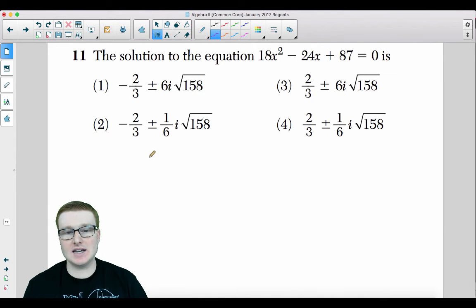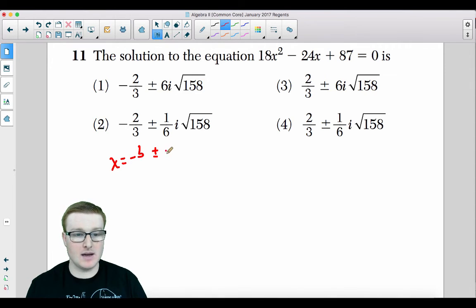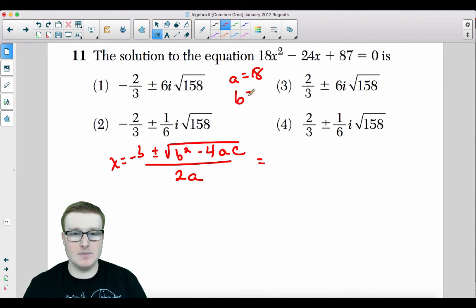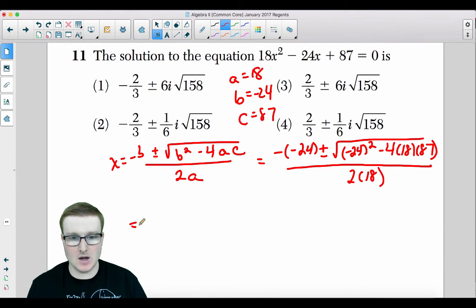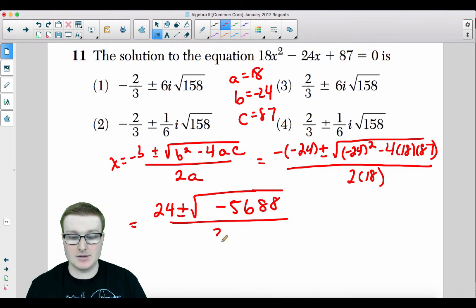Number 11. The solution to the equation 18X squared minus 24X plus 87 equals 0 is what? So the best thing to do is to use the quadratic formula. And it's going to be very complicated because there's a lot of math going on here. So the quadratic formula is X equals negative B plus minus the square root of B squared minus 4AC all over 2A. So your A is 18, your B is negative 24, your C is 87. It's going to be very big. Just keep going with it. So we have negative negative 24 plus minus the square root of negative 24 squared minus 4 times 18 times 87 all over 2 times 18.